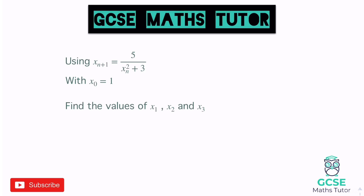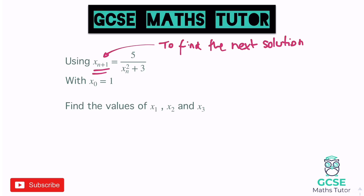Now this little bit of language here, xn plus 1, just means in very simple terms to find the next solution. And that's what we use iteration for, to find estimates to a solution to an equation. That just means to find the next solution. And the little n here means the current solution, the current number that we're going to be using.